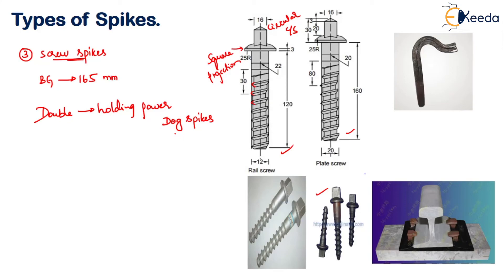Screw spikes are not commonly used in Indian railways. The major disadvantage is high cost and maintenance. Even though they have double the power compared to your dog spikes, the cost will become very high, and hence they will not be used to a major extent.